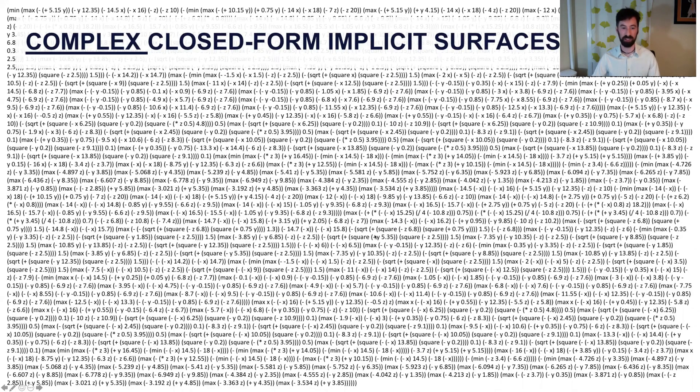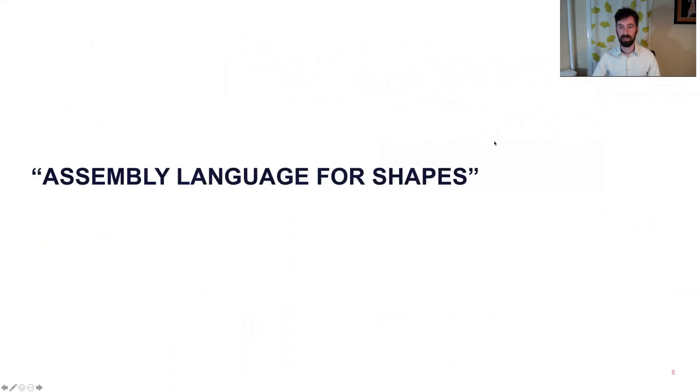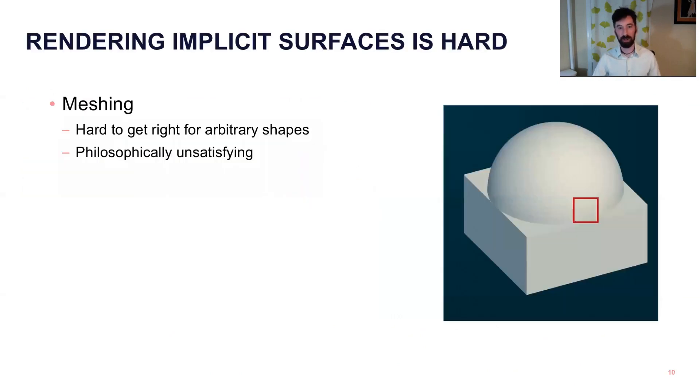When we say complex closed-form implicit surfaces, we just mean big functions. So this thing in the background here has about a thousand clauses, and if you render it in 3D space, you get this lovely architectural scene. So you should really think of this as an assembly language for shapes. It's a very low-level representation that you would compile down to from higher-level tools. And it's got a lot of cool properties. It's very neat, but it's also very hard to render.